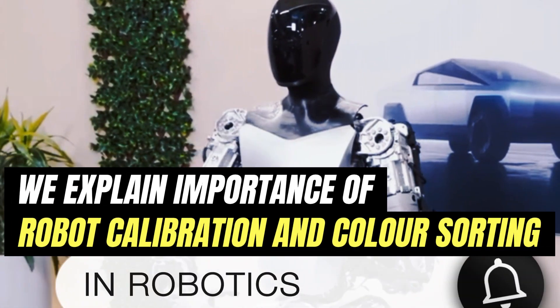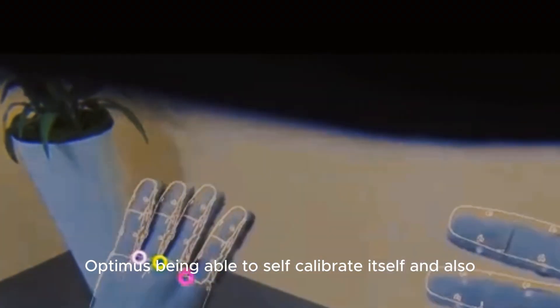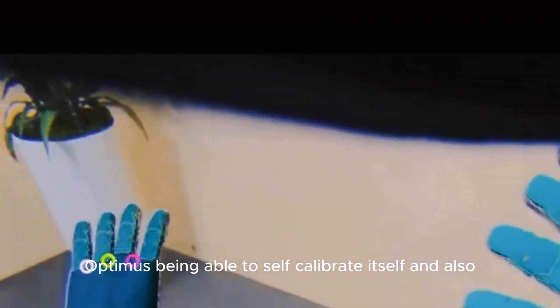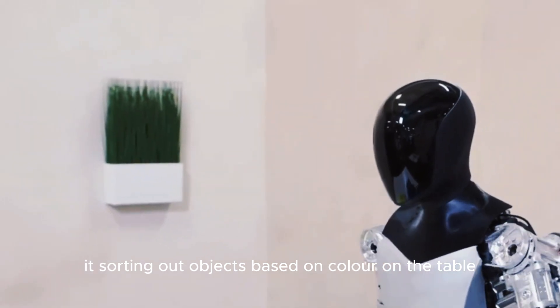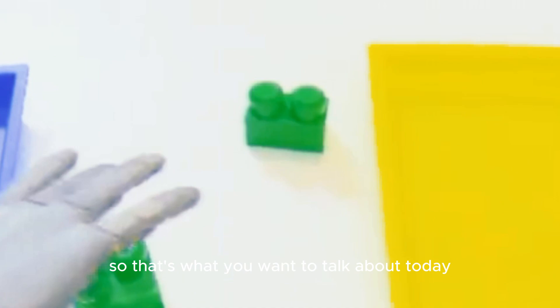An update about Optimus robot. In the video, the main important thing was Optimus being able to self-calibrate itself and also sorting out objects based on color on the table. So that's what we want to talk about.